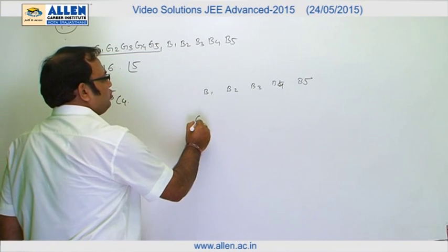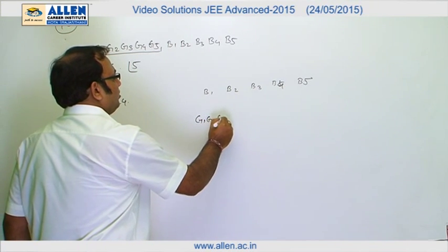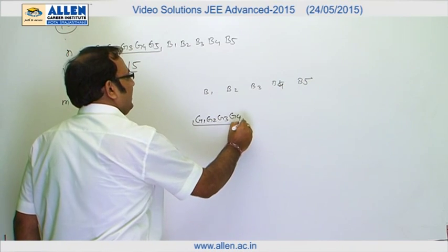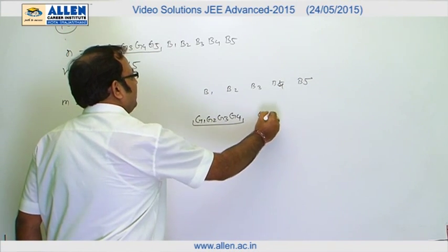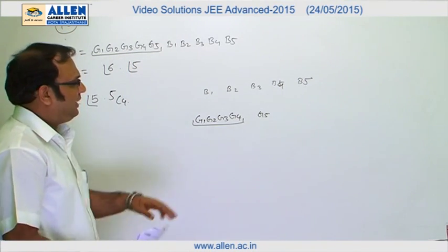So 4 girls, let's say I choose G1, G2, G3, G4. I will consider them to be in a cluster, and then there is one separate girl, G5. And there are 6 gaps.